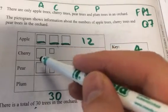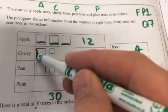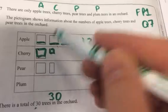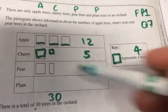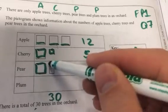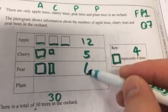How many for cherry then? It's going to be 5, because that's a full square plus a quarter square equals 5. How many for pear? It's going to be 6. A full square plus a half square, so 4 plus 2.